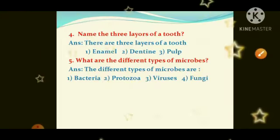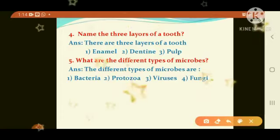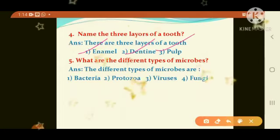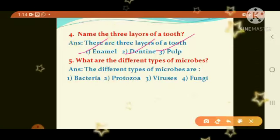Question number 4: name the 3 layers of a tooth. Answer: the three layers are — first, enamel; second, dentine; third, pulp. Fifth question: what are the different types of microbes? Answer: the different types of microbes are — first, bacteria; second, protozoa; third, viruses; fourth, fungi.